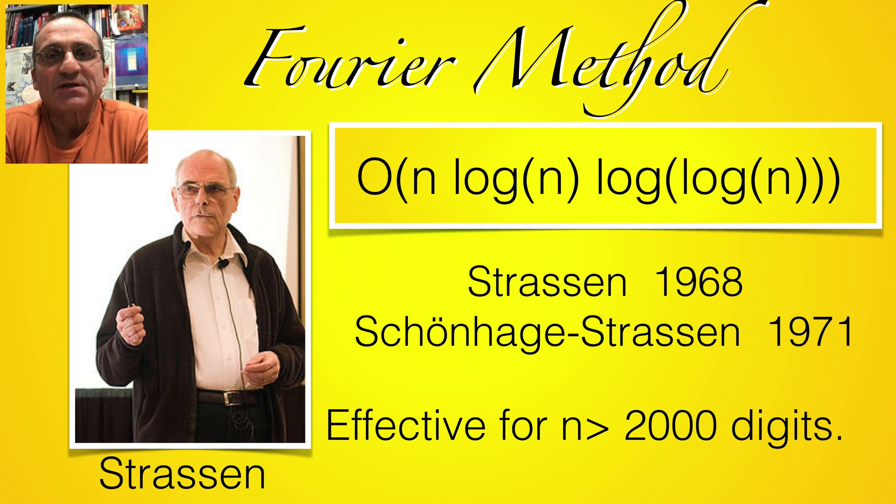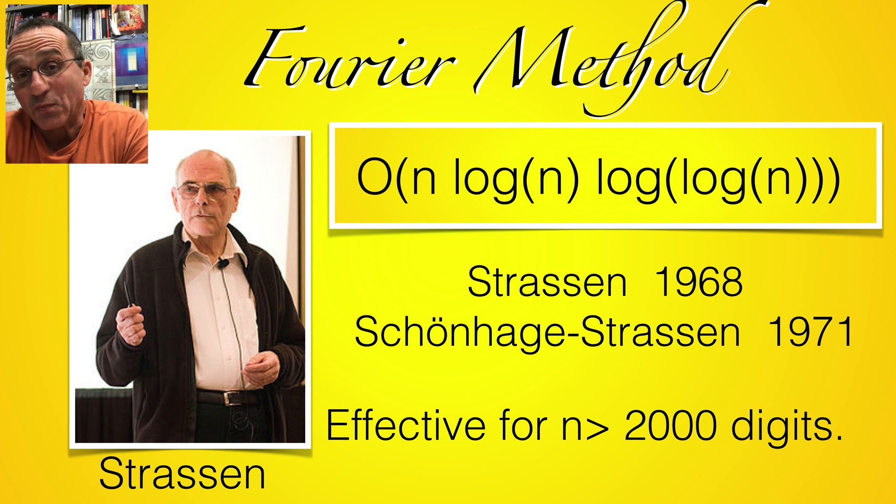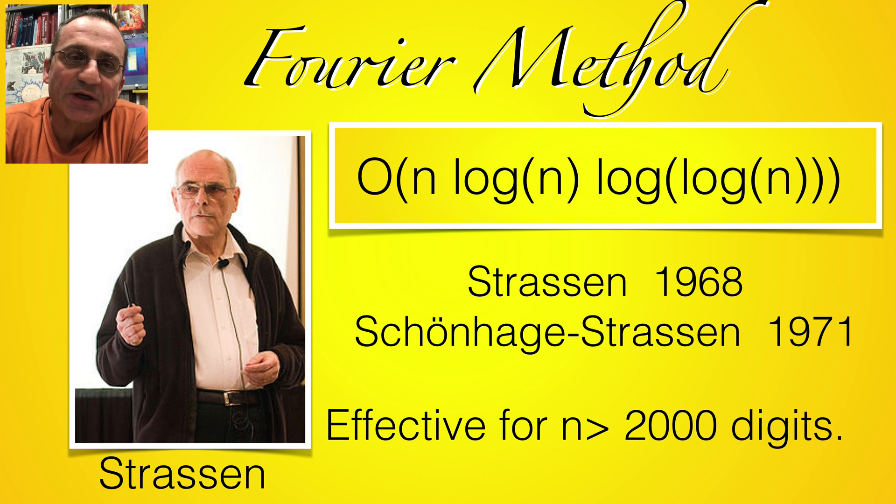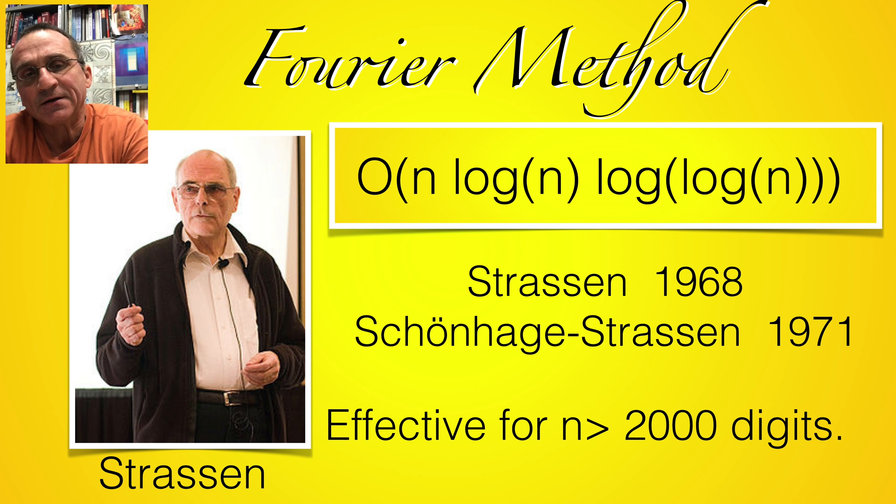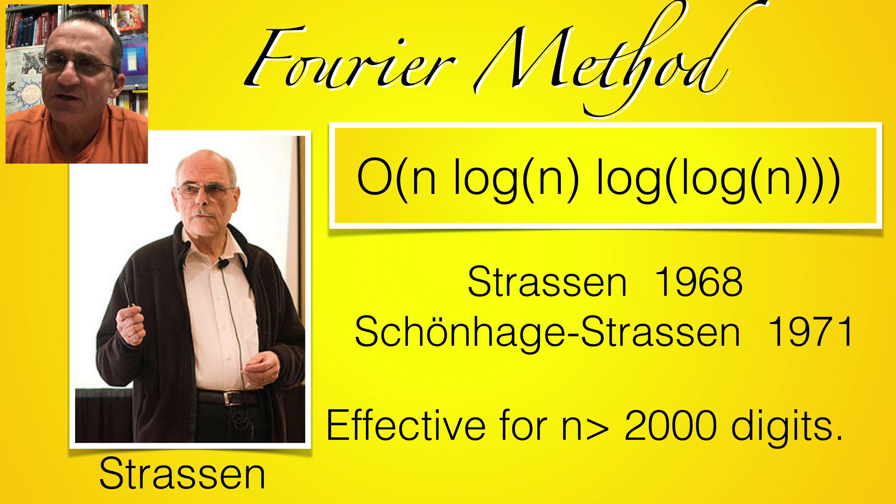The fastest known method uses linear algebra, in particular uses the Fourier theory. This is a method found by Volker Strassen in 1968 and Schoenhagen Strassen in 1971. So the complexity drops considerably, it's n log n log log n, and this is used in libraries like the GNU Arithmetic Library or Mathematica. I think it's a few thousand digits where the threshold is where it's getting better.